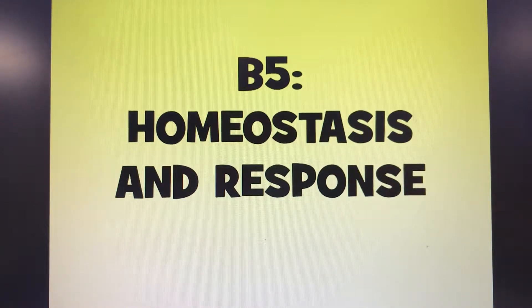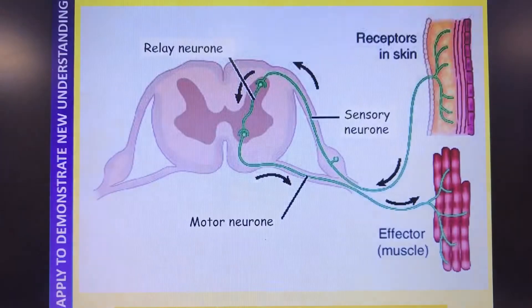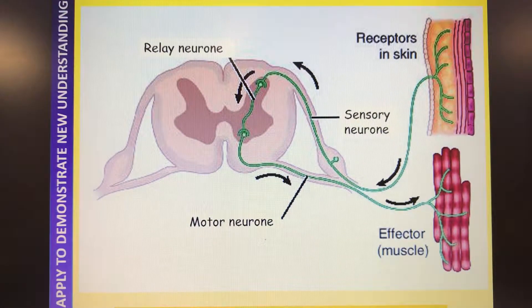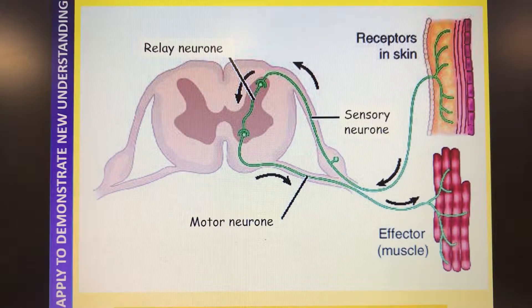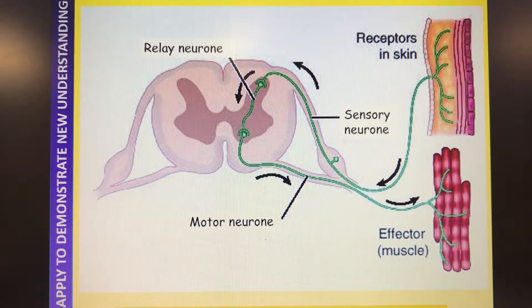This is B5 and we're looking at the human nervous system. On this picture you can see on the left there is a cross-section through the spine. This is the central nervous system. There's no brain involvement in the reflex arc - it is automatic and involuntary.